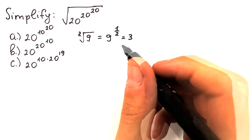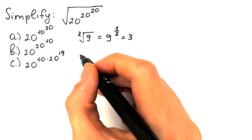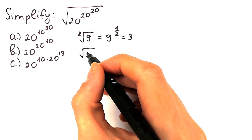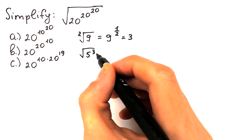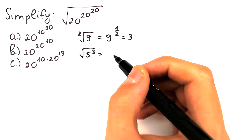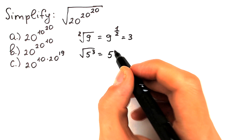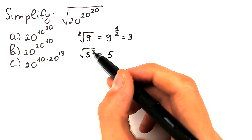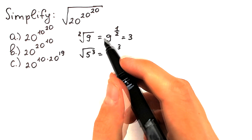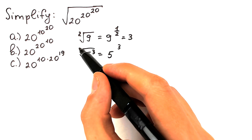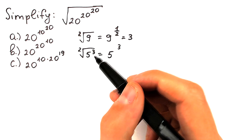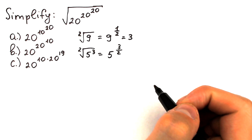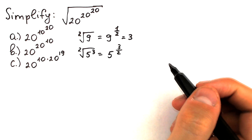Let's look at another example: the square root of 5 cubed. We can write this in another way — as 5 to the power 3/2. The power of the value goes to the numerator, and the root's index (2) goes to the denominator. So we can write it as 5 to the power 3 over 2.